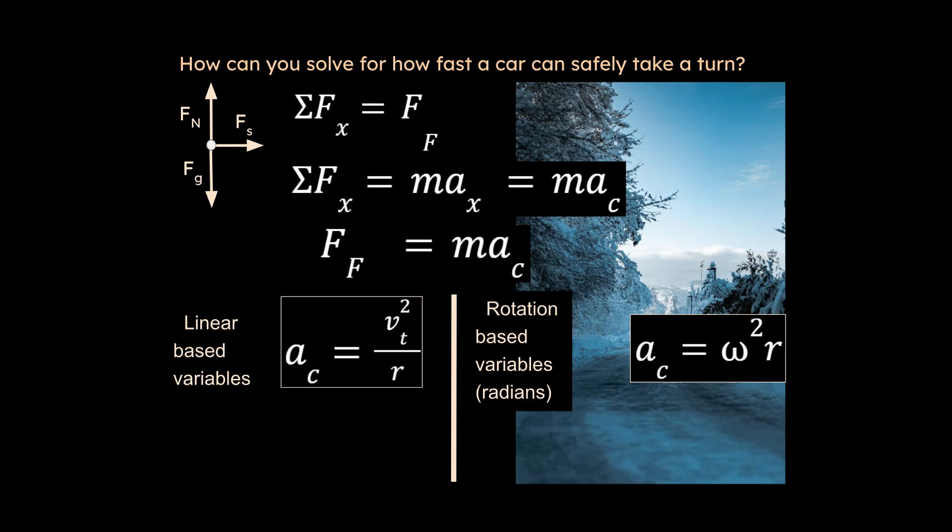Now that just depends on what the problem gives you. If it talks about omega right here, and it's talking about radians per second, then you would plug it in for acceleration over here. Or if it talks about tangential speed or meters per second, then you would plug that in over here for the acceleration. So it just depends on the problem. If you haven't gotten to this yet into radian-based variables, you probably will later in your course. Just hang in there, sit tight, and know that there are two different ways to calculate centripetal acceleration.